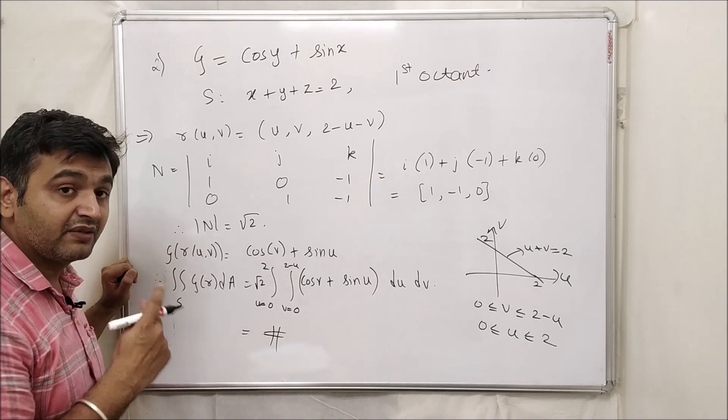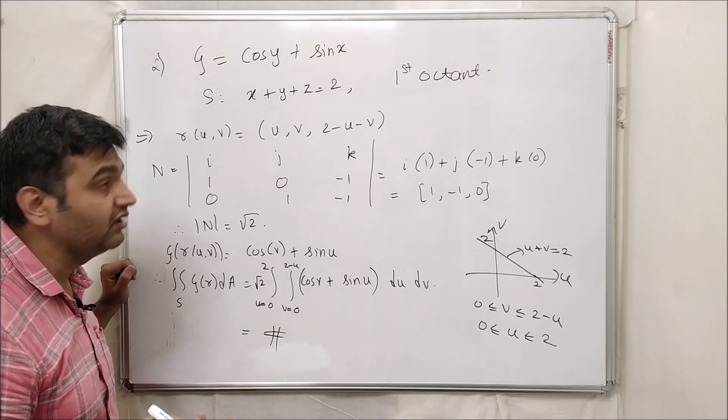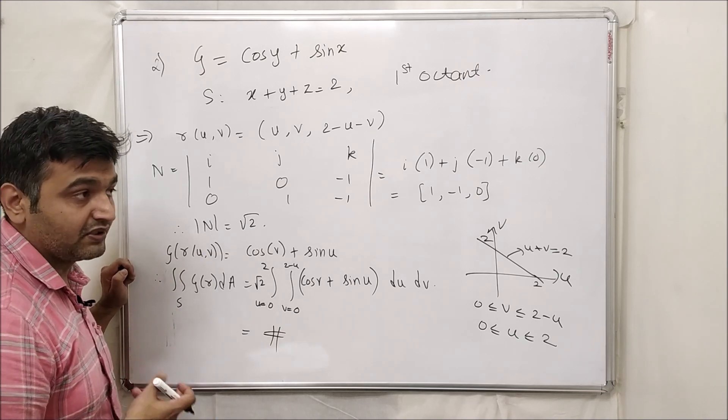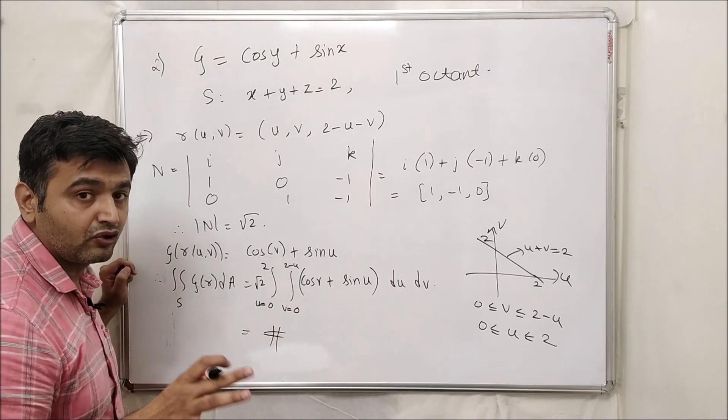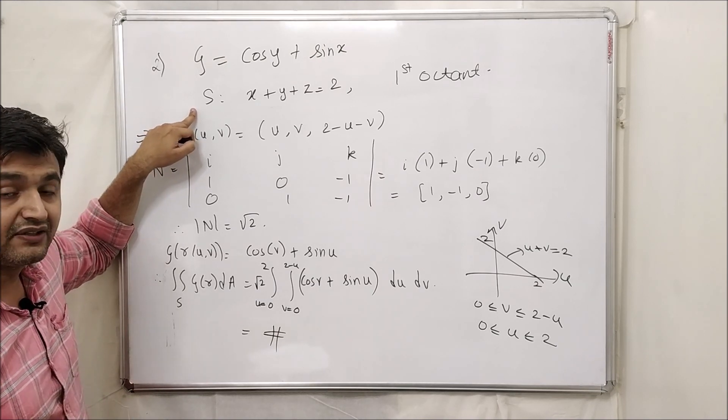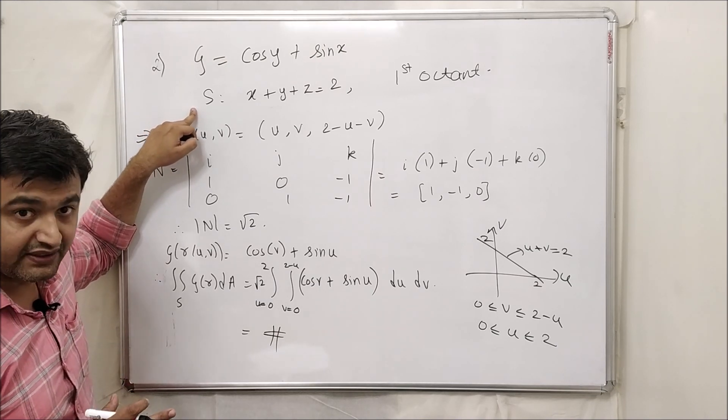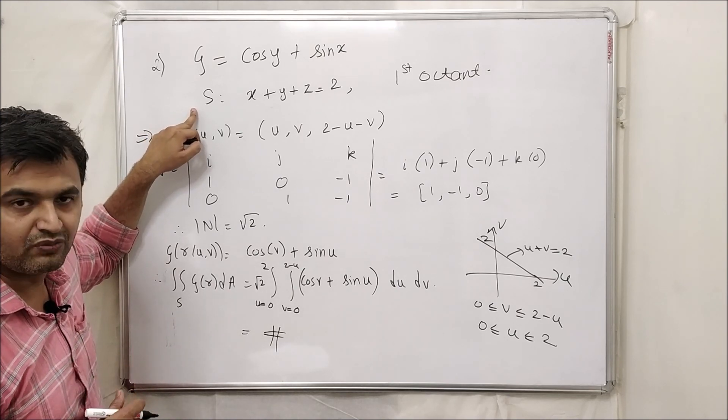Okay, now this problem can be solved in one more way. That is my type 3 that I will talk about in the next lecture. And that's why I have taken this example. Either you can do by this parameterization type, or I will give you a formula when you have a nice kind of surfaces. Then you can directly use that formula to solve the surface integral, but that we will see in the next lecture.